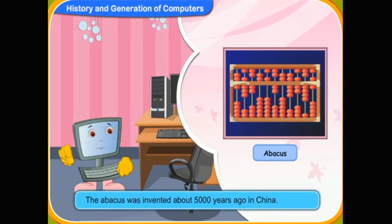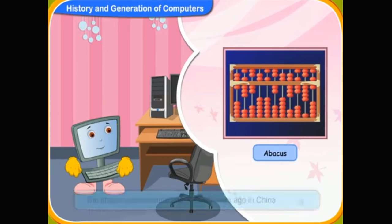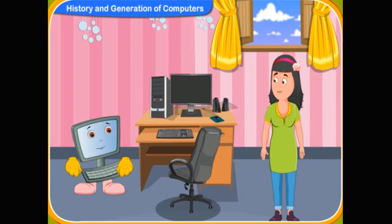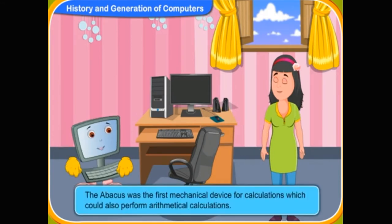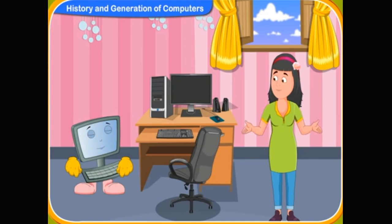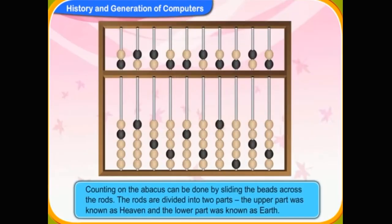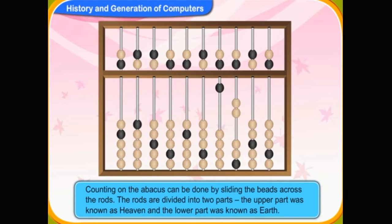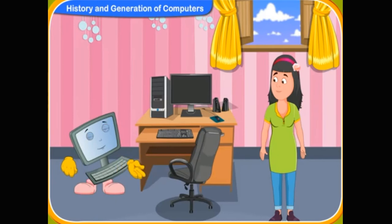The abacus was invented about 5,000 years ago in China. It was the first mechanical device for calculation, which could also perform arithmetical calculations. It is made of a wooden frame with rods, each having beads. Counting on the abacus is done by sliding these beads across the rods. The rods are divided into two parts — the upper part was known as heaven and the lower part was known as earth.